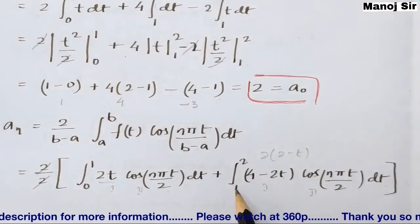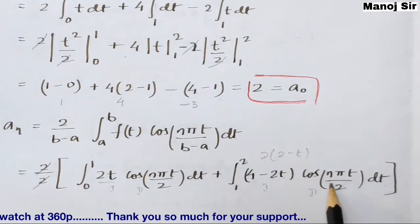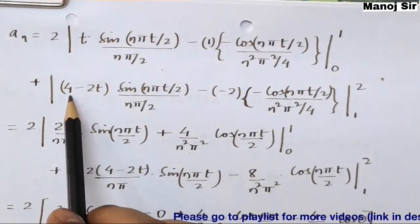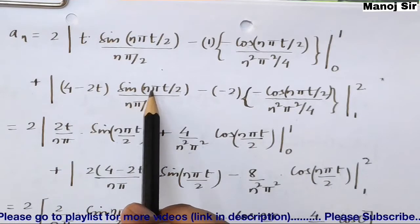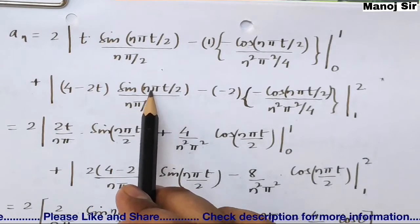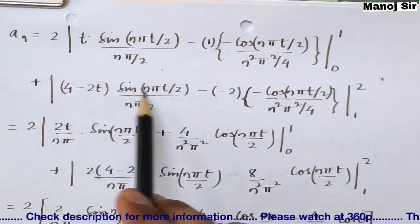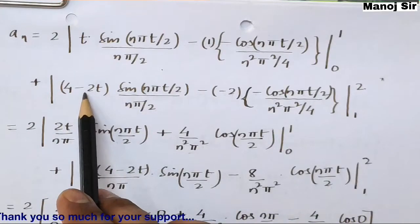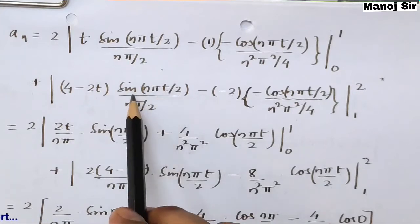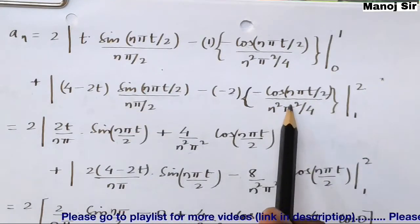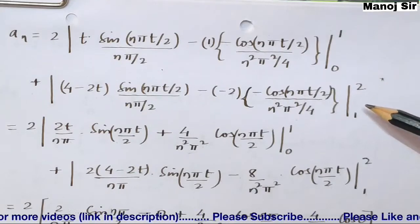For the second integral, limit from 1 to 2, first function is (4 − 2t) and second function is cos(nπt/2). Applying integration by parts: (4 − 2t) · sin(nπt/2)/(nπ/2) minus differentiation of (4 − 2t) which is −2, times integration of sin(nπt/2) giving −cos(nπt/2)/(nπ/2), all divided by nπ/2 again, giving n²π²/4 in the denominator. Limit from 1 to 2.